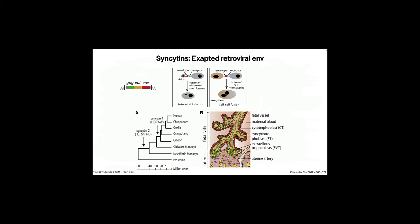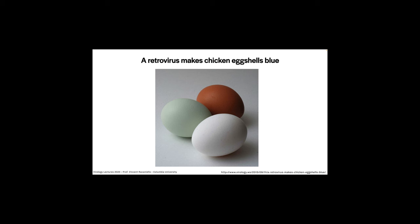You can see syncytin-2 gave rise to placentas in many species — old world monkeys, gibbons, orangutans, gorillas, chimps, and humans. Without viruses, humans would be laying eggs. And those eggs would be white — unless a retrovirus integrates next to a pigment gene. Blue chicken eggs exist because a retrovirus integrated next to a pigment gene that makes the eggshell blue. So a retrovirus makes chicken eggshells blue. Without viruses, humans would be laying white eggs.